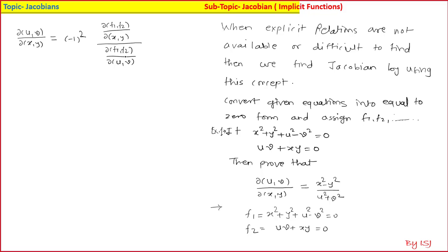If you apply simple algebra — if I want to shift the denominator Jacobian to the numerator, it will get inverted. So ∂(f1,f2) terms cancel and what remains is ∂(u,v)/∂(x,y). So (−1)² means plus one. Let us call the numerator Jacobian as N and the denominator Jacobian as D. For two-variable Jacobian it is (−1)², for three-variable Jacobian it is (−1)³.